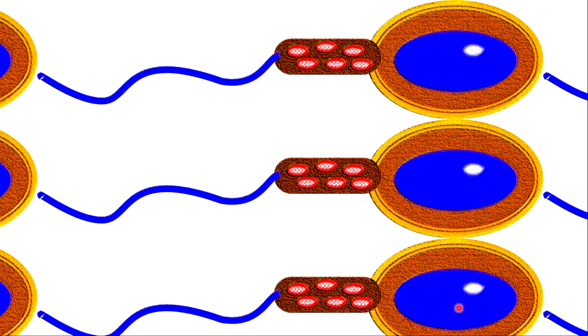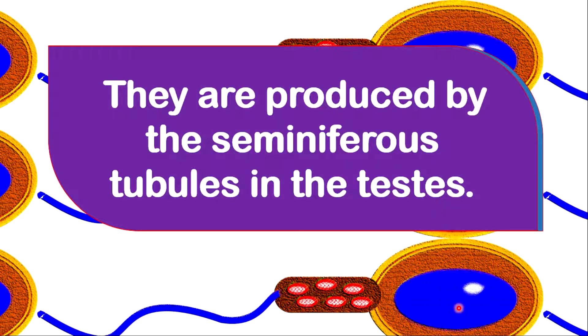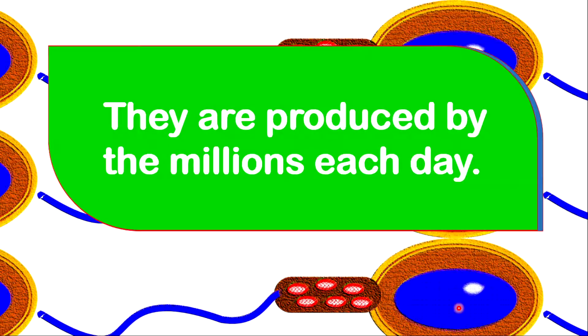Now, let's look at some fun facts about the sperm cells. Sperm cells are produced by a process called spermatogenesis. They are produced in the seminiferous tubules in the testes. They are produced by the millions every day.